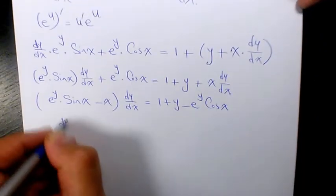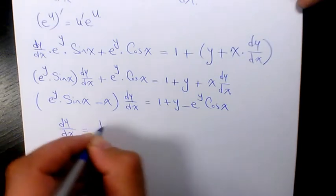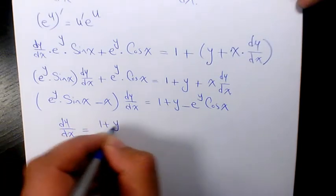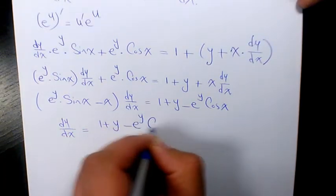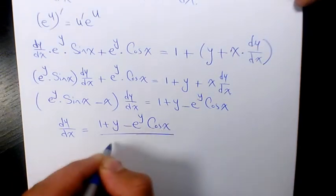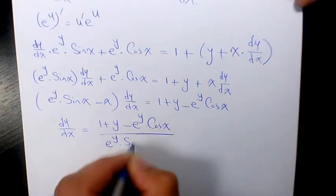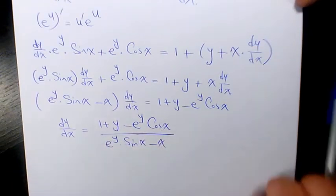So dy/dx equals 1 plus y minus e to the power of y cosine x, all over e to the power of y sine x minus x. This is the final answer.